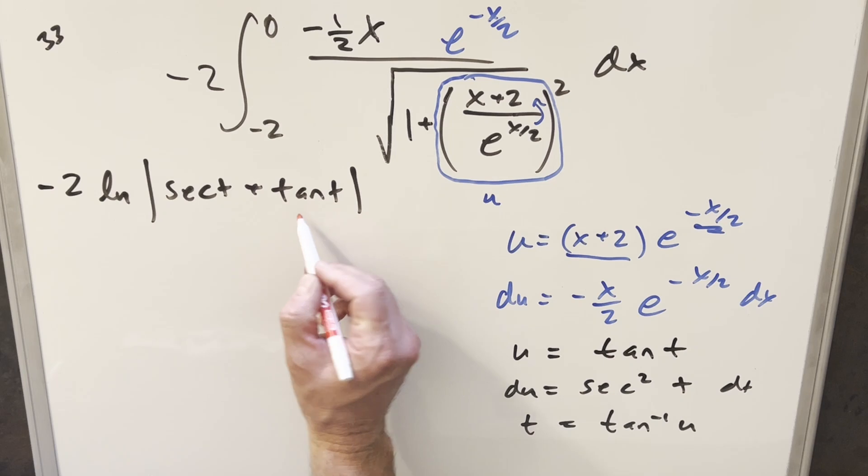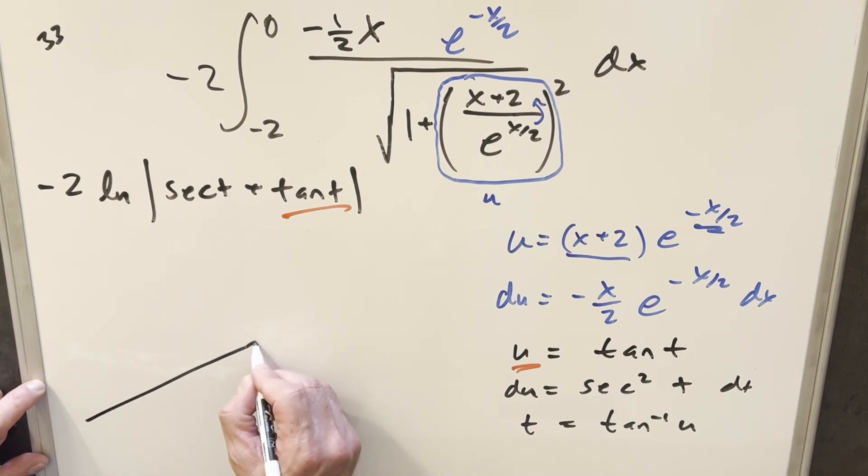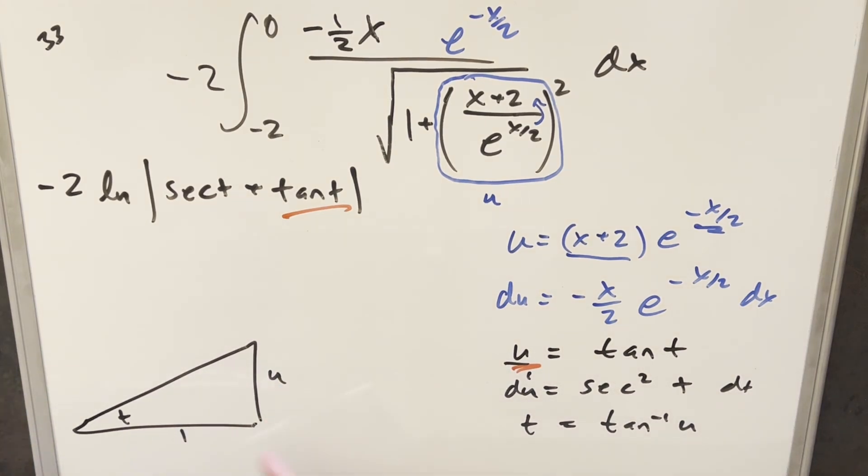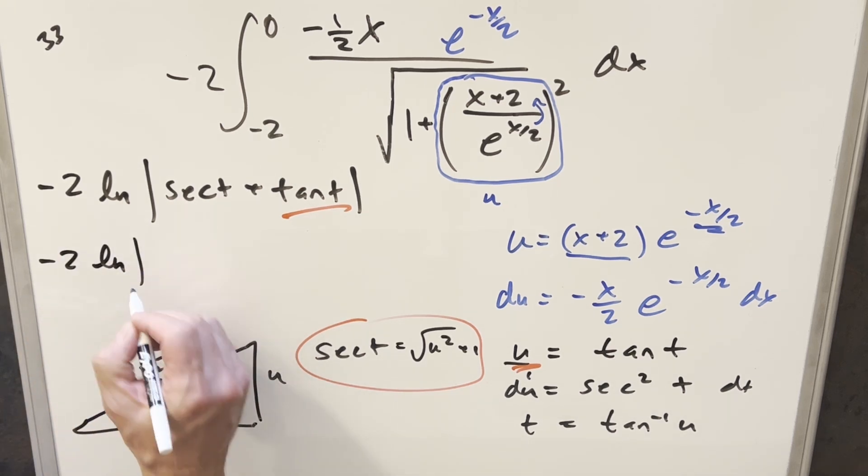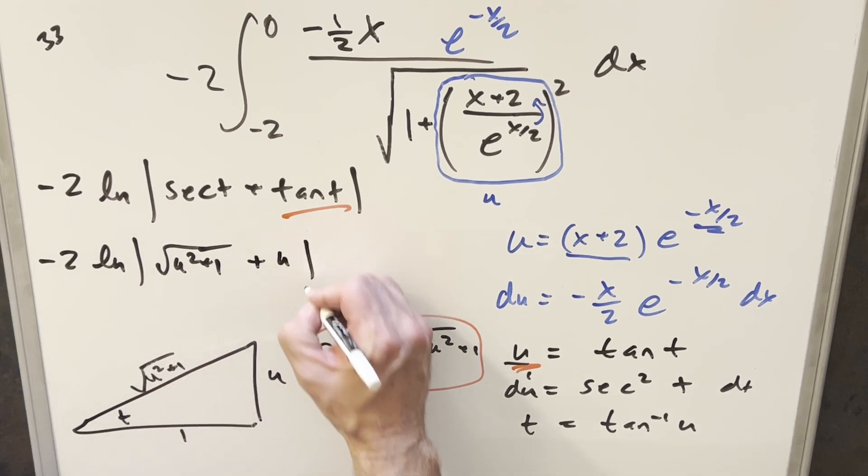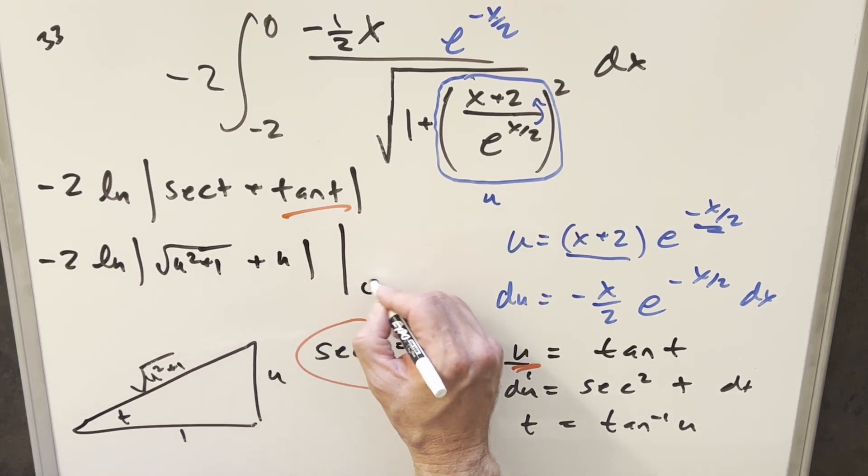So first for tan t, we already have a value for that. That's just going to be u. I just need to use the triangle to find the value for secant t. So let's just draw this really quick. If our angle on this is t, tan t, we can write this as u over 1. So we can write our triangle with the sides this way. Then just using the Pythagorean theorem, the third side is going to be just square root u squared plus 1. We want our value for secant t. That's just going to be hypotenuse over adjacent. So that's just going to be square root u squared plus 1. So taking this and plugging it back in along with this other value for tan t, we're going to have minus 2 natural log square root u squared plus 1 plus u. And then our bounds from the previous board in u was from 0 to 2.